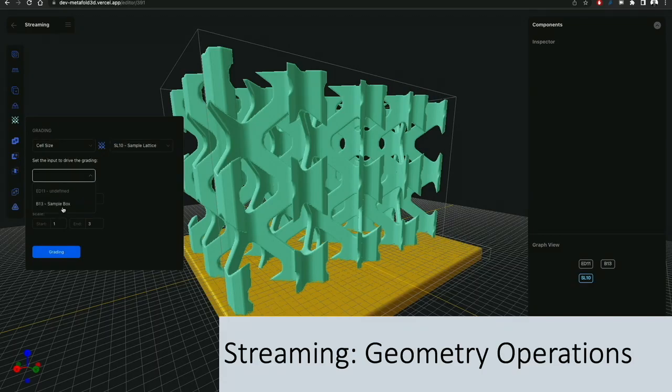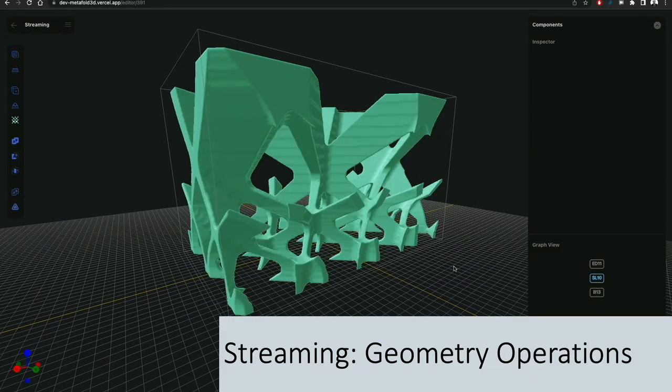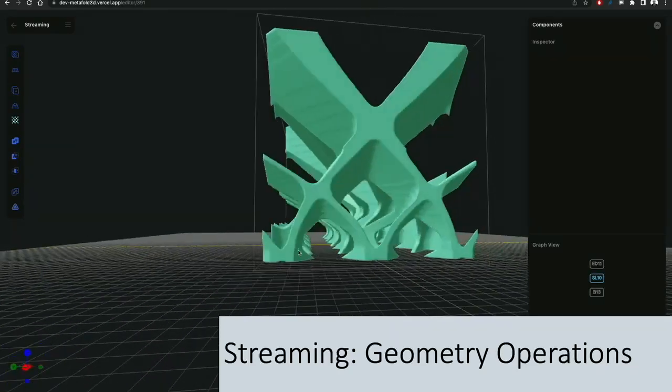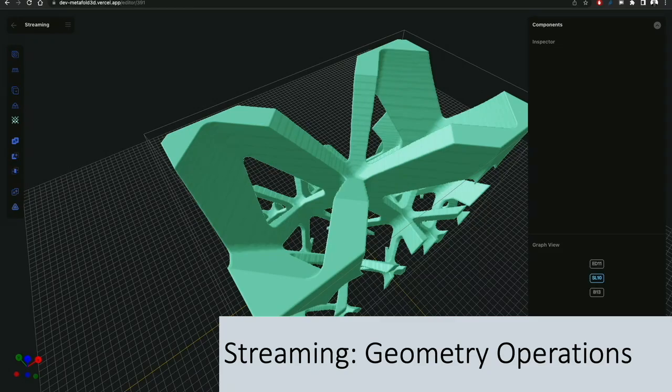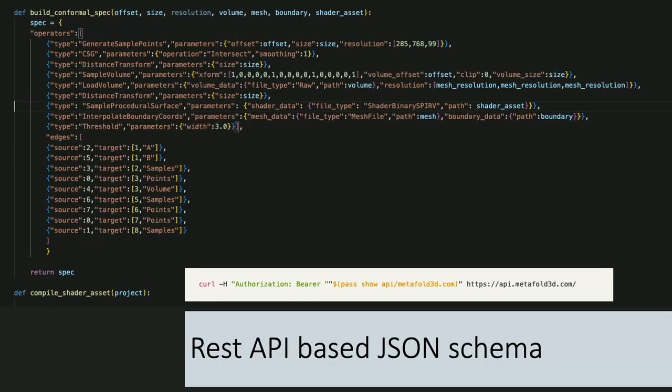The other thing is that everything I showed you is accessible through our API. And it works like a REST API. You have a token and you make requests. This request is just a JSON file. I've exposed this in Python, but this is all that it is. You set up the volume, you set up some distance transforms, some STLs or design spaces to sample. And you hit go and you get results back. And you can build your own product with this, your own scalable web-based implicit modeler.